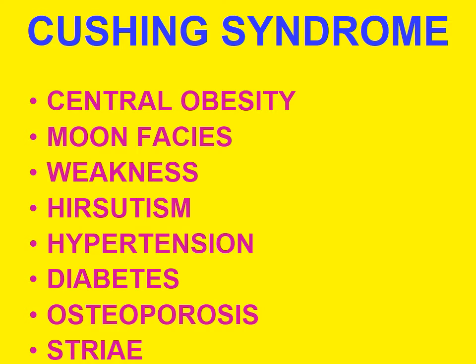Cushing syndrome most commonly occurs due to administration of excessive exogenous glucocorticoids — this is the most common cause. It could also be due to cortisol hypersecretion by adrenal adenoma, carcinoma, or nodular hyperplasia, or ectopic ACTH production by a non-endocrine neoplasm, or primary hypothalamic-pituitary disorders associated with ACTH hypersecretion.